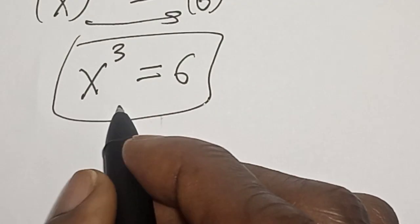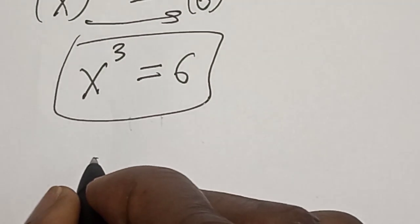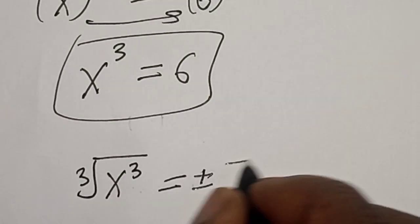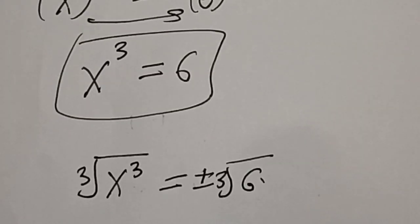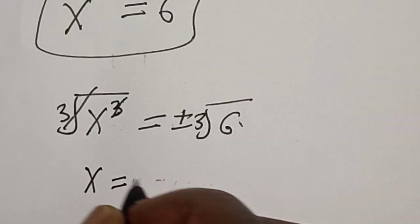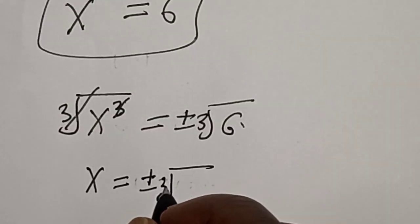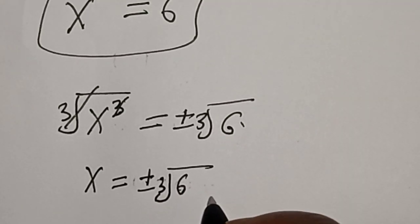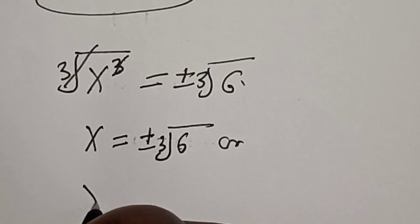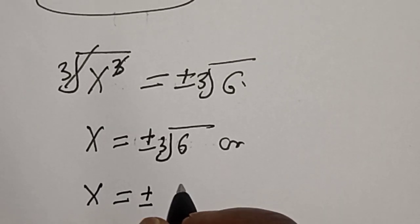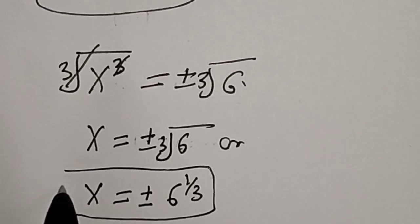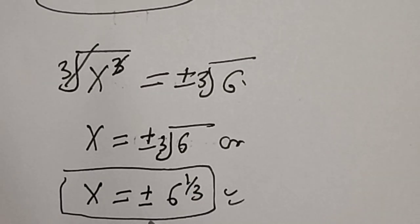That is not our final answer yet. Let's take the cube root of both sides. The cube root of s raised to the power 3 — the cube root will cancel, leaving s equal to plus or minus the cube root of 6, which is 6 raised to the power 1 over 3. That is our final answer. If you enjoyed the class, please don't forget to like, share, comment, and subscribe. Thank you.